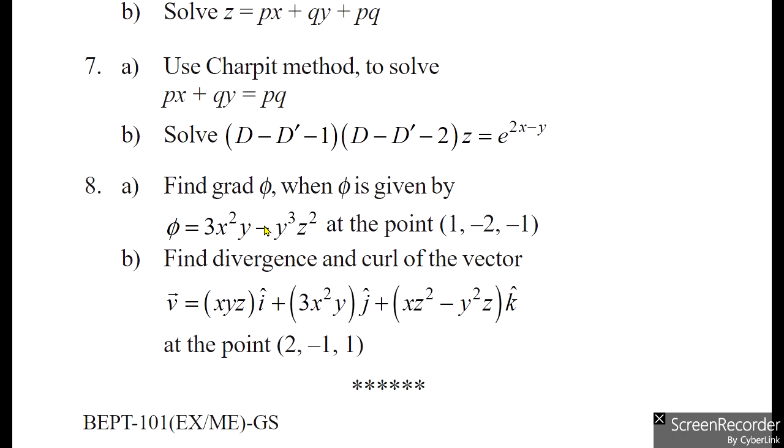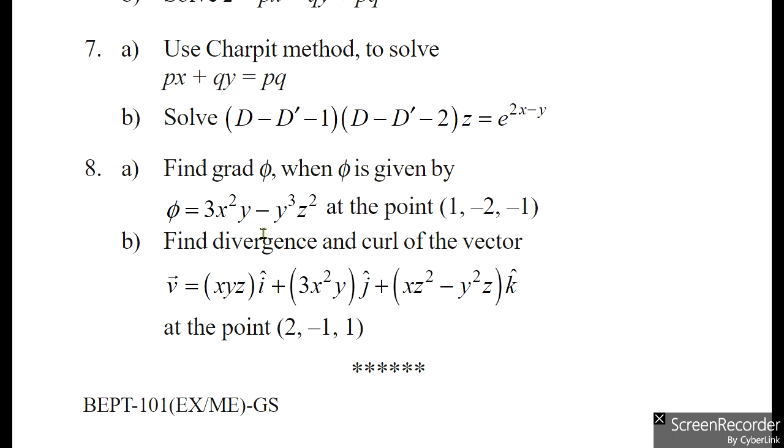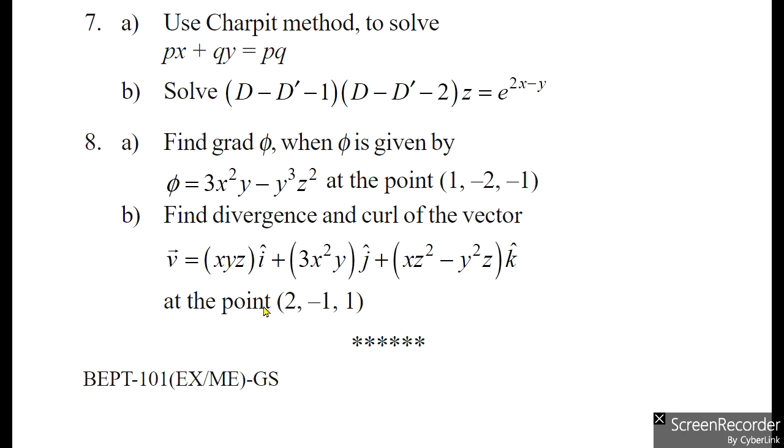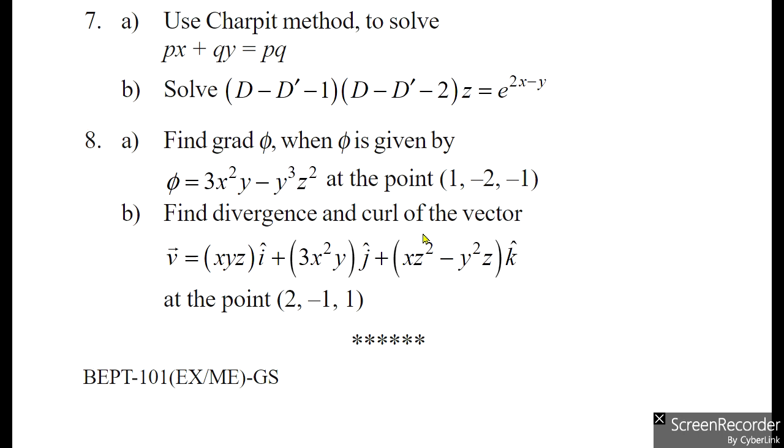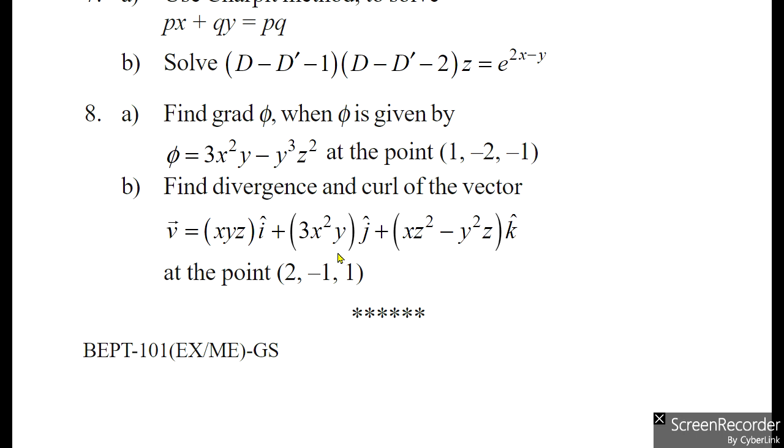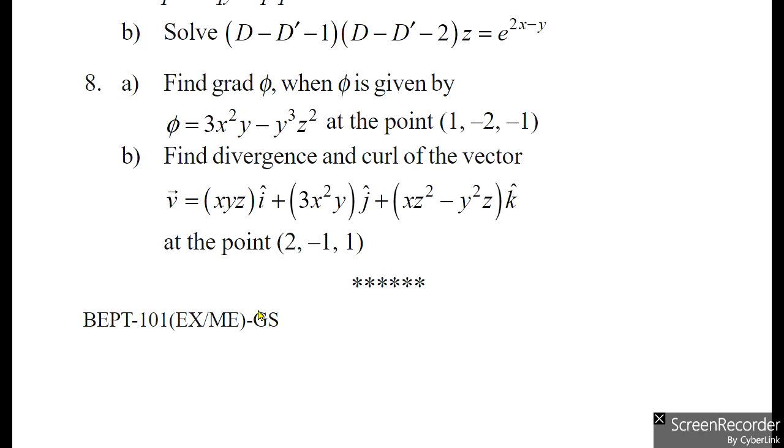Eighth question, part A: Find grad φ when φ is given by φ = 3x²y - y³z² at the point (1, -2, -1). Part B: Find divergence and curl of the vector (xyz)i + (3x²y)j + (xyz² - y²z)k at point (2, -1, 1).